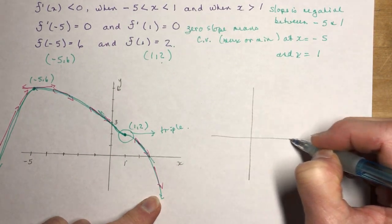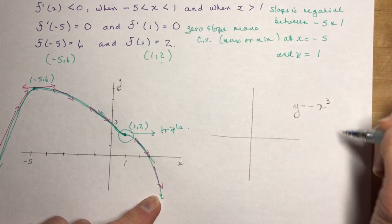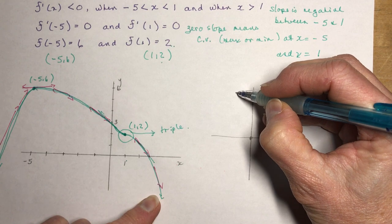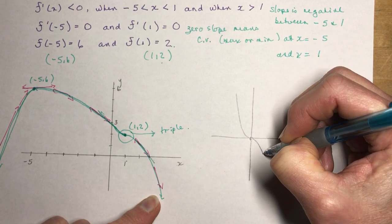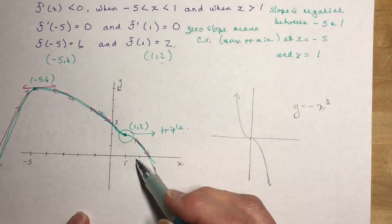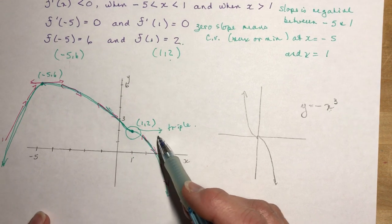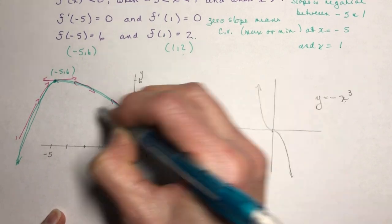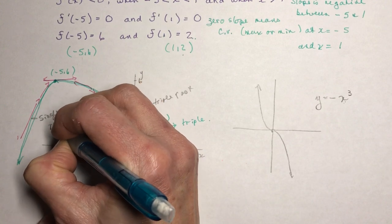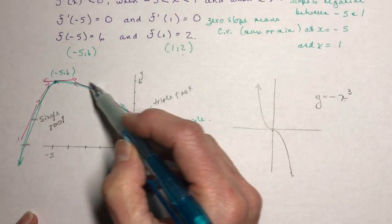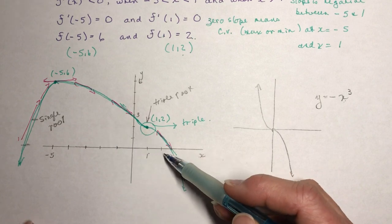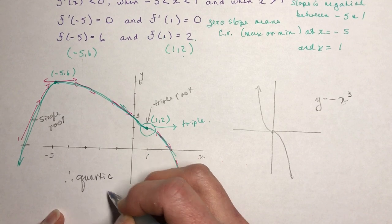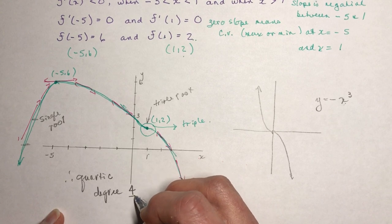And it happens to be y = -x³. So -x³ has one zero, it has a triple root here. A triple root means it's coming down like this, it actually has zero slope in here, and then it goes down. So this function, if I asked you what the degree is of this function, you should be telling me that this is a quartic function, because this is a triple root here, triple root, and then you also have a single root over here somewhere. So it's a quartic function, or fourth degree.